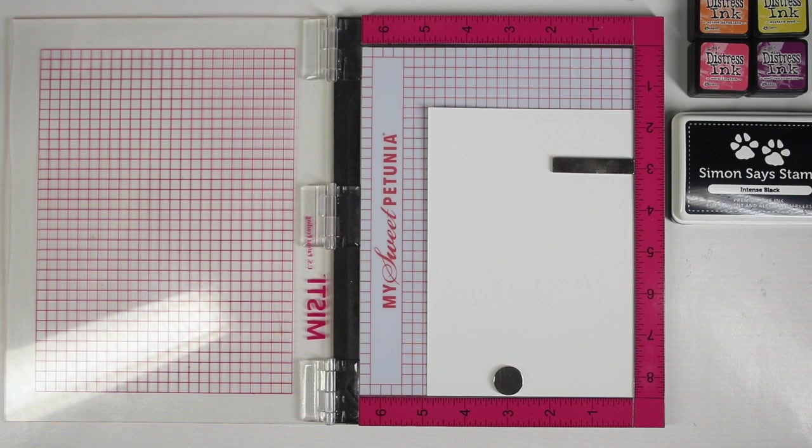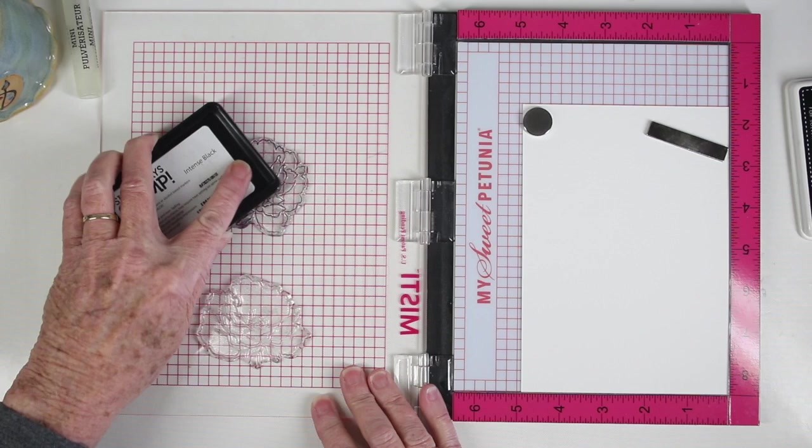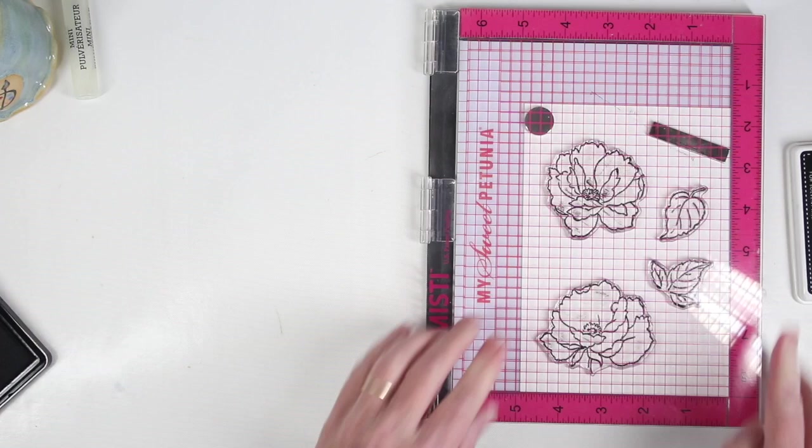So I am working on a piece of watercolor cardstock here, and I'm going to use my simonsaysstamp intense black ink, since I will be doing a little bit of watercolor. I am just doing the outlines of the stamps, and I want to do these really bold, and I'll stamp these about three times, since there's quite a bit of texture in my paper.